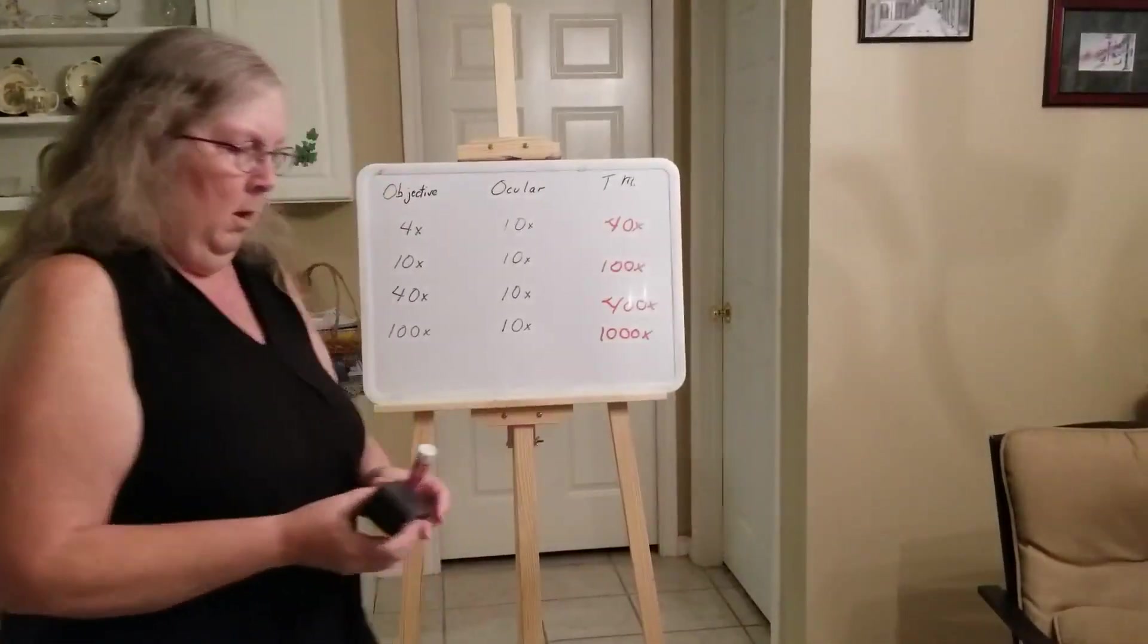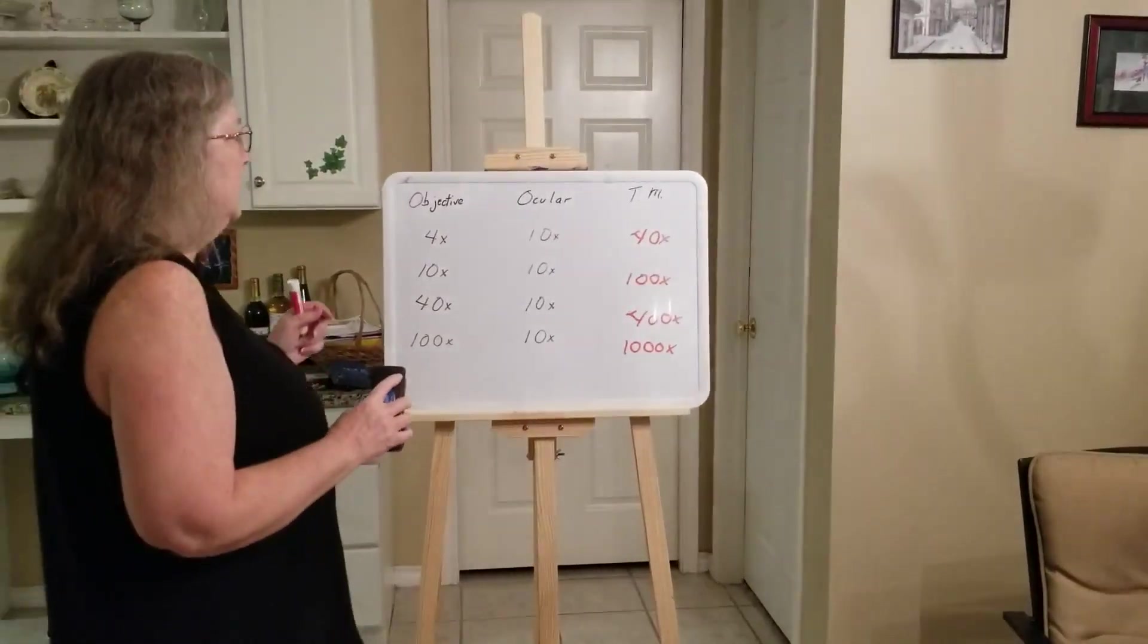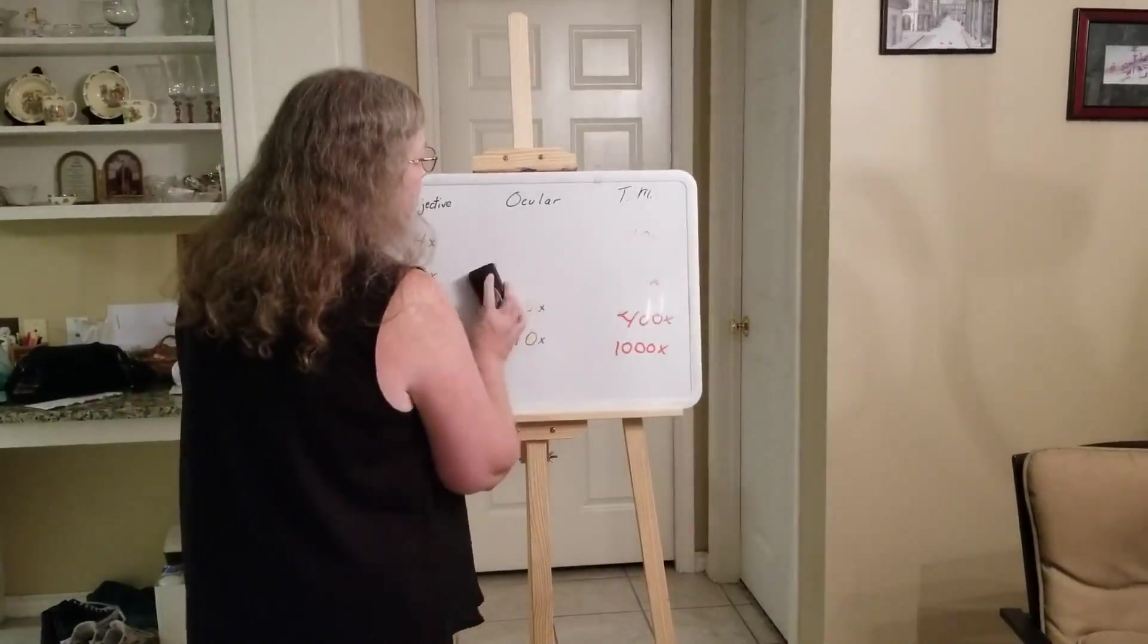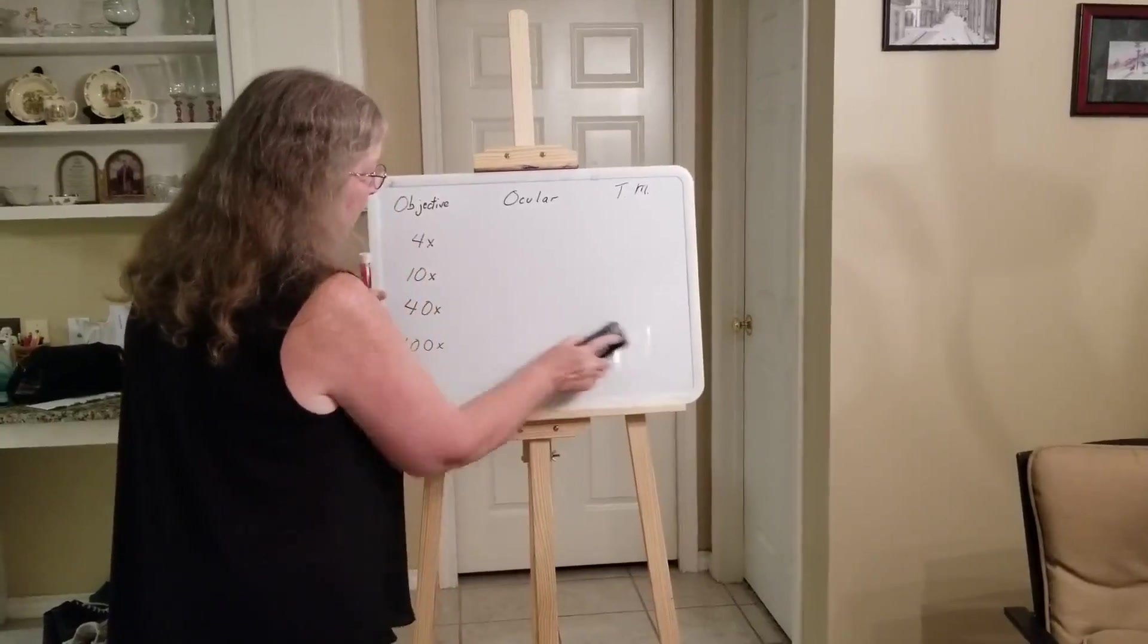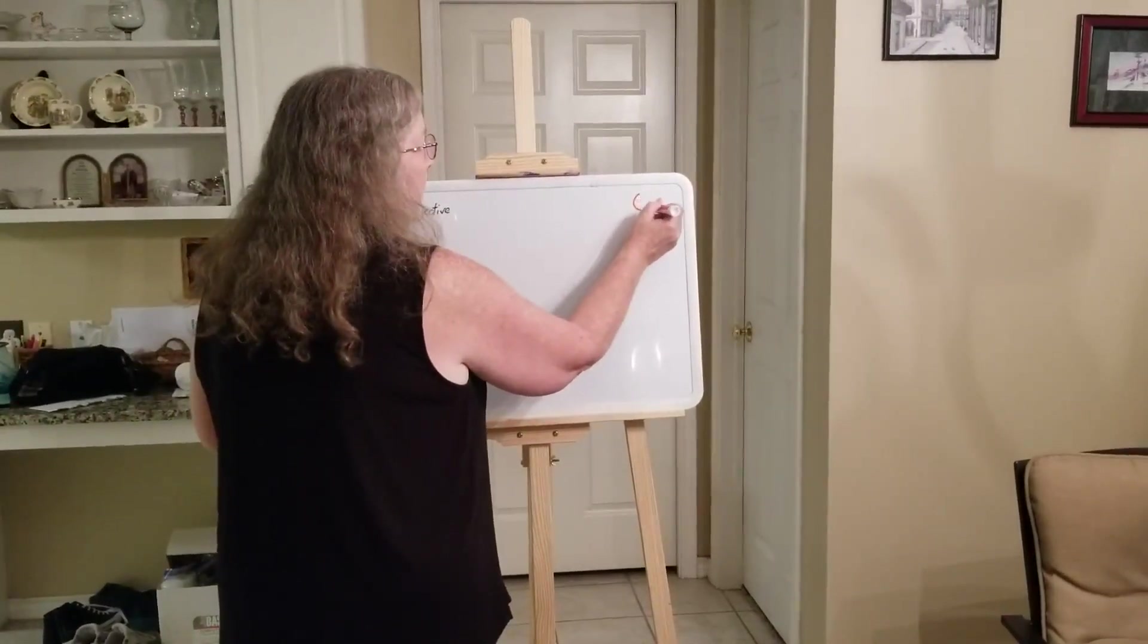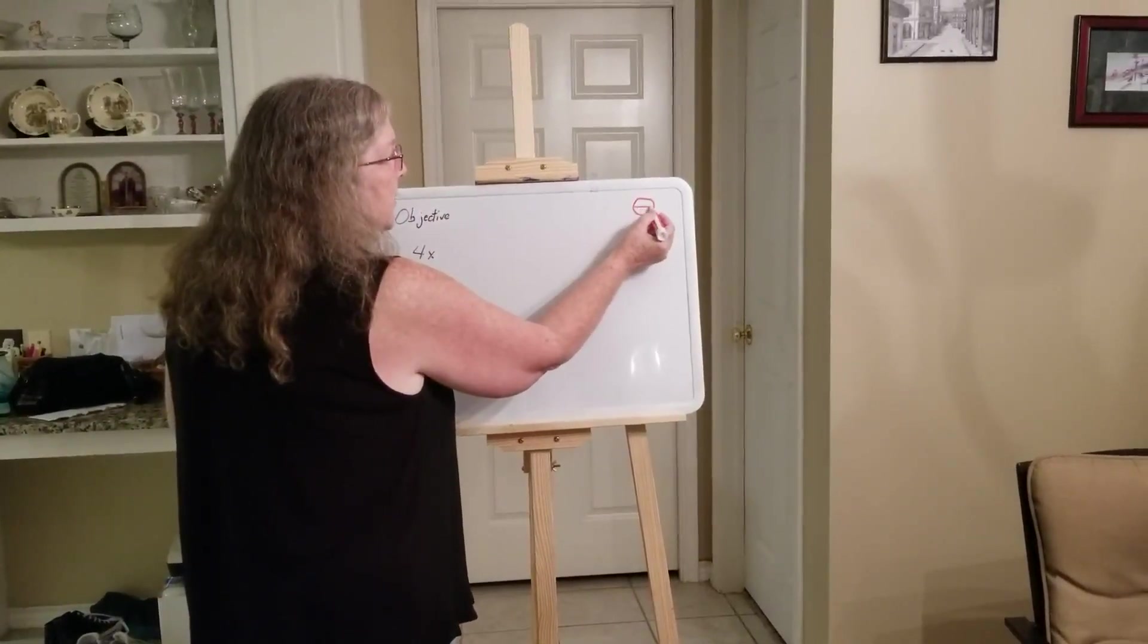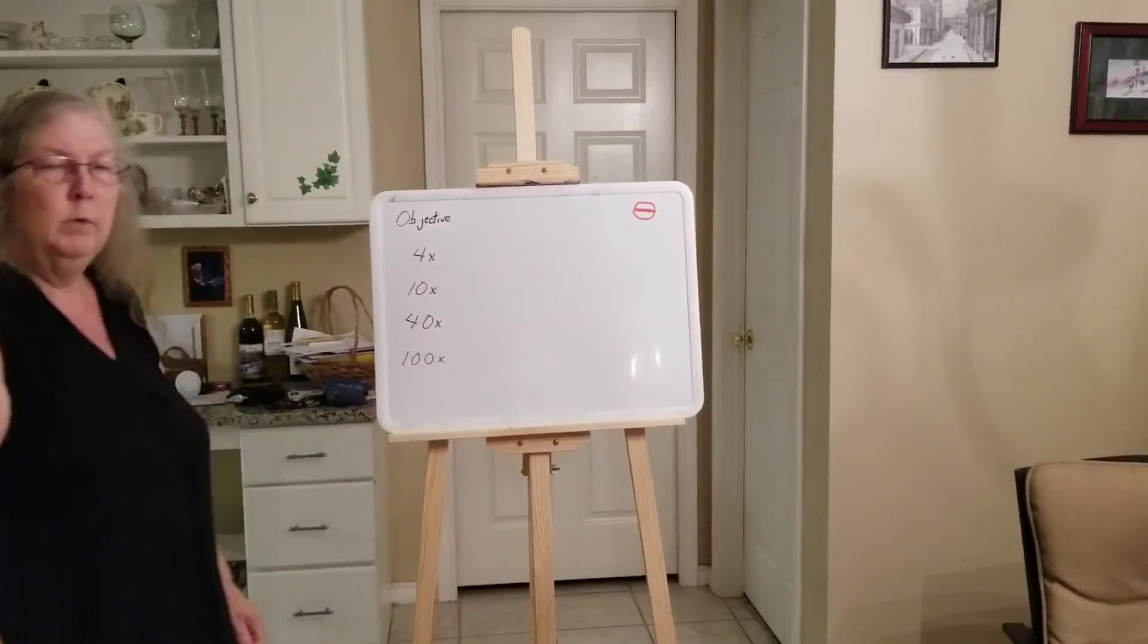Now there's another calculation that we often ask you to figure out. And that is going to be the field diameter. What that is asking you for is: the field diameter is when you are looking through the microscope, what is the distance of the diameter? What's the distance across here? How much is that?